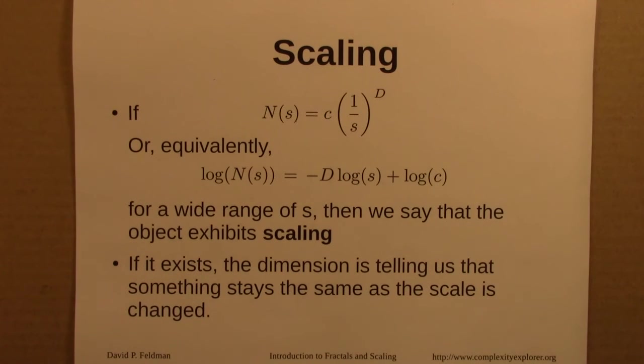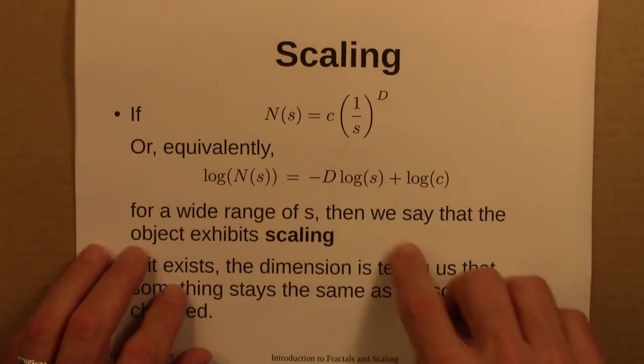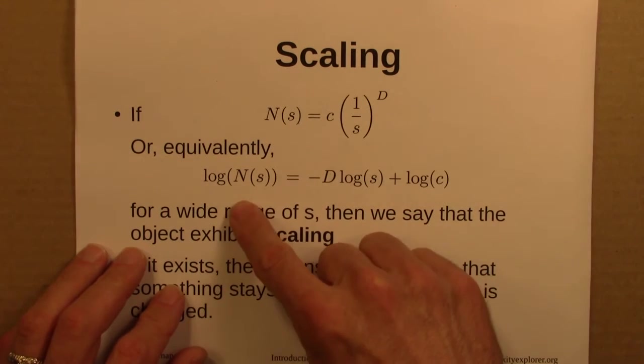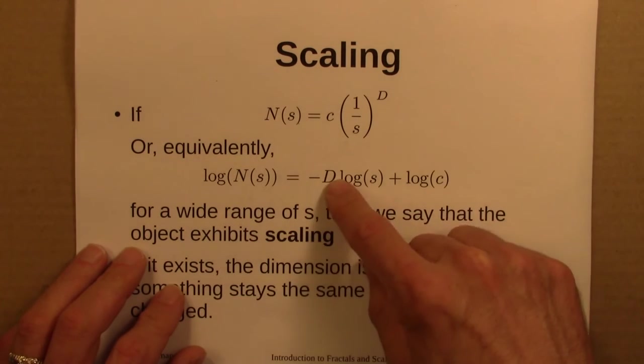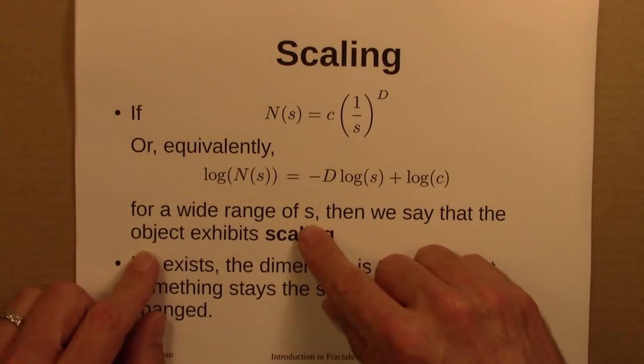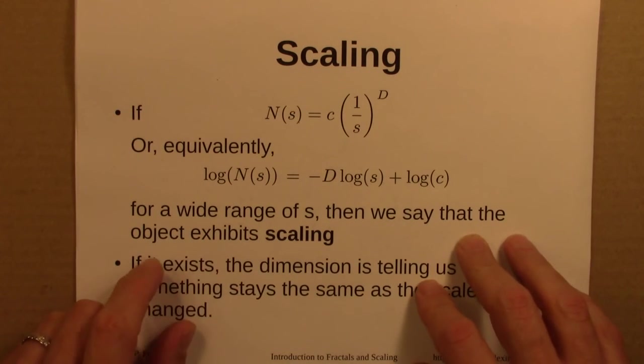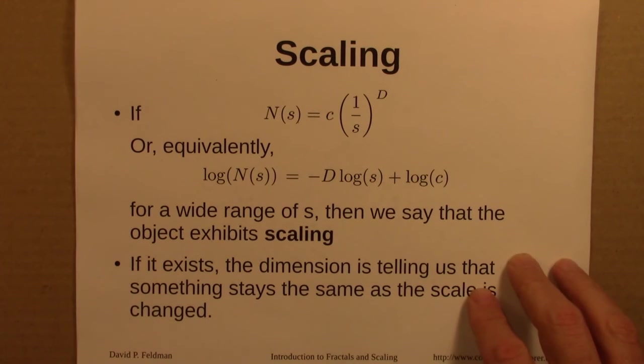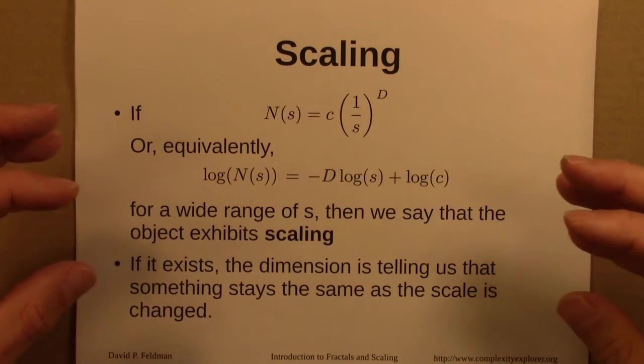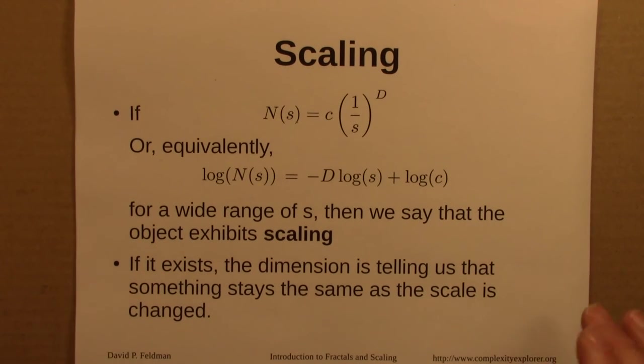And lastly, introduce the idea of scaling. And we'll see this a lot throughout the rest of the course. So if this relationship is true, or equivalently if this relationship is true, remember these equations are the same. So if these are true over a wide range of s, and that's a pretty subjective specification, but if it's over a wide range of s, then one would say that the object exhibits scaling. There's some relationship that scales up and down. And what the dimension tells us then, is that there's something that's staying the same as the scale is changed. So that's the idea of scaling.